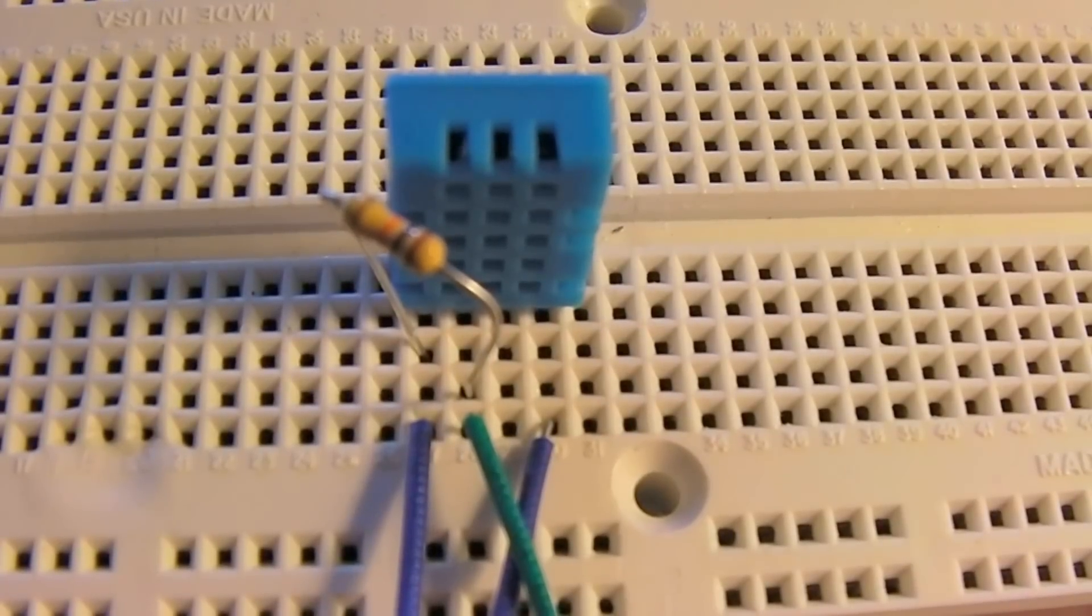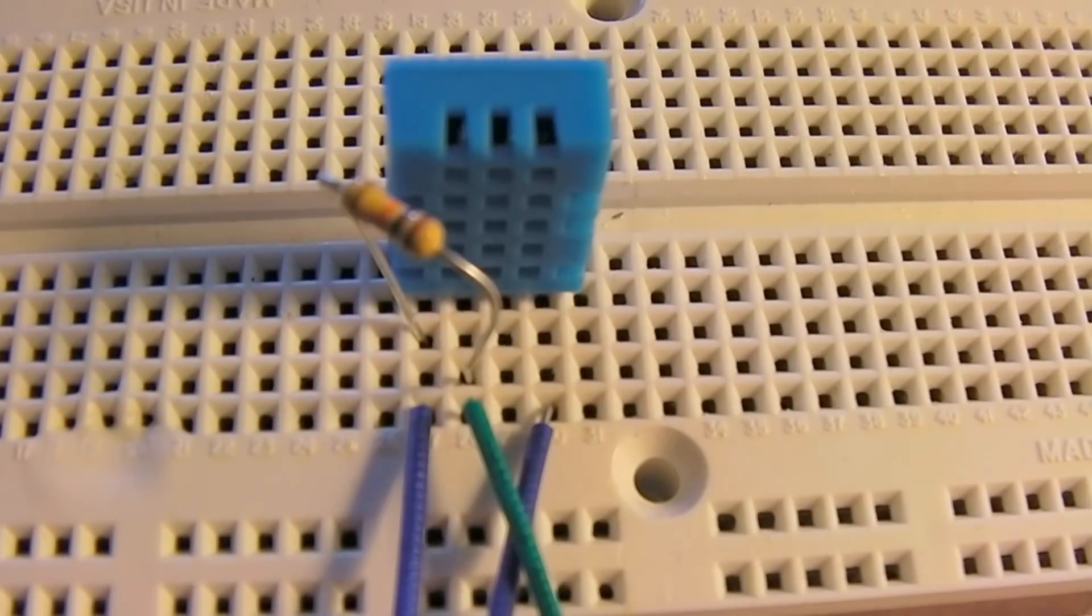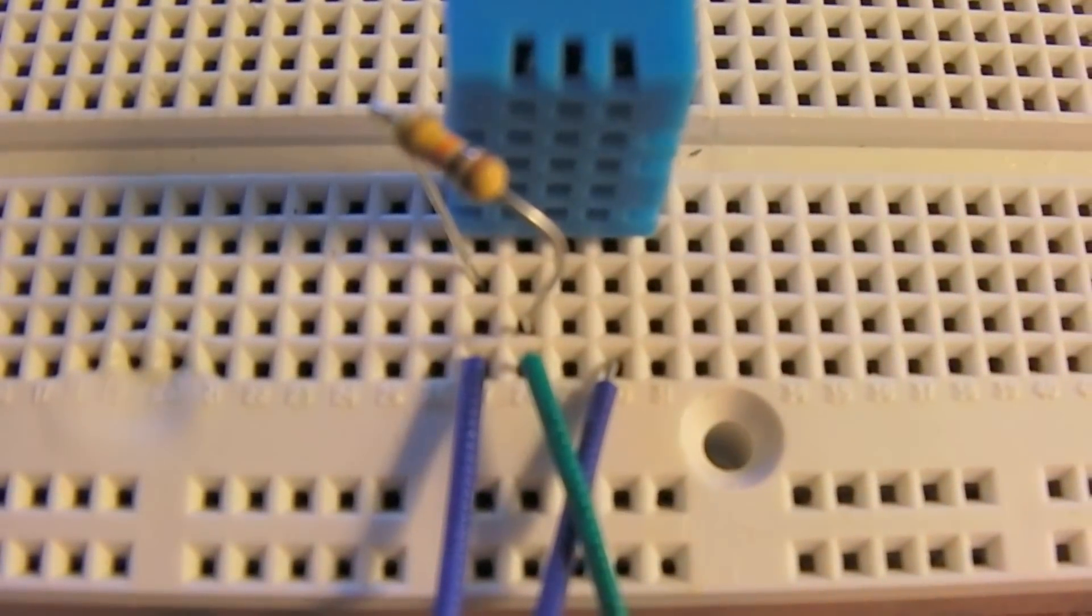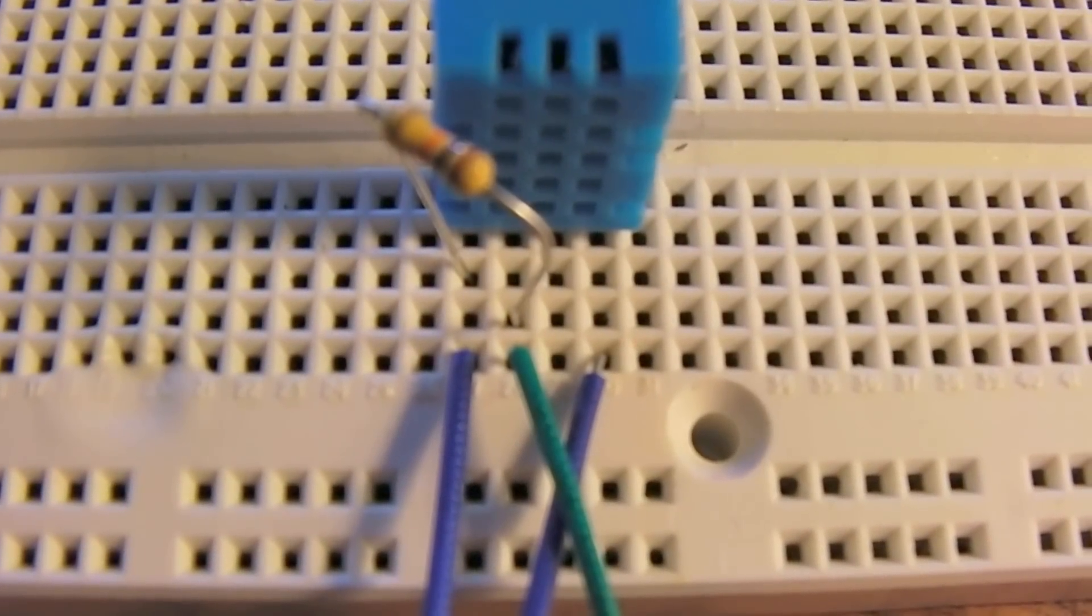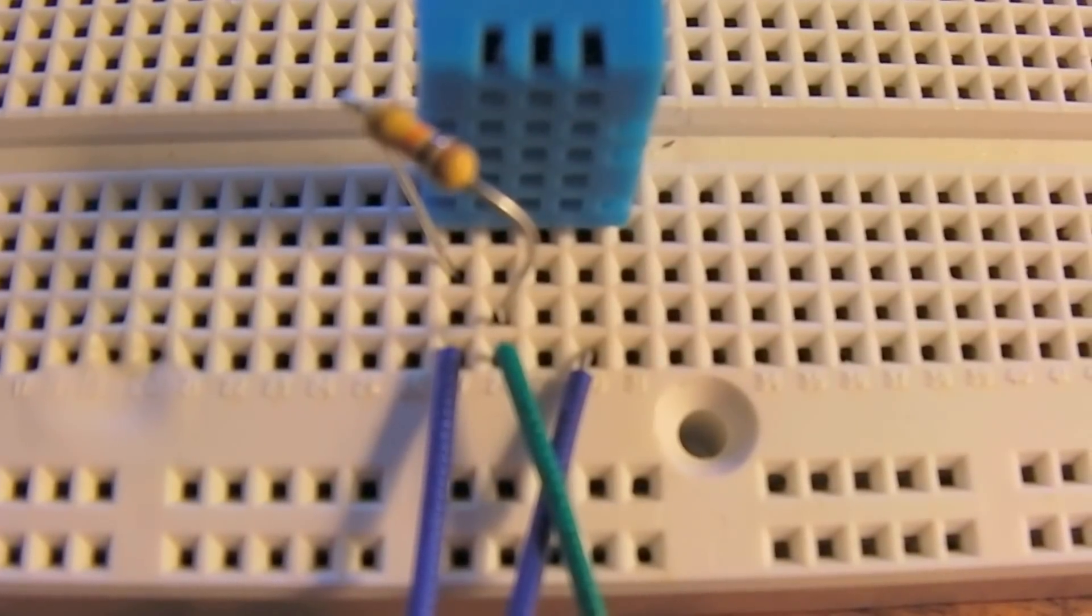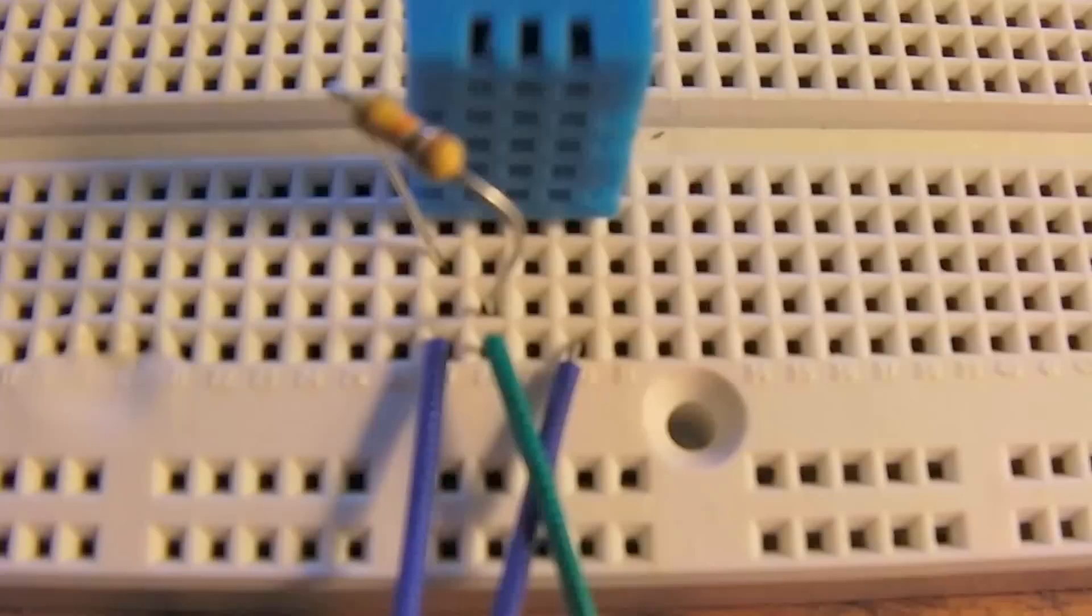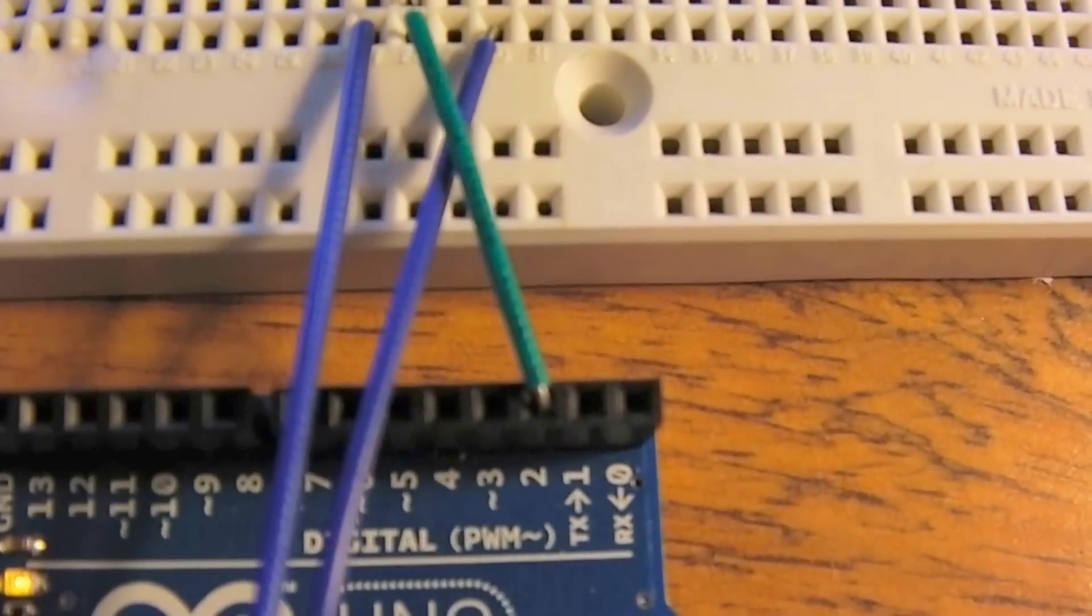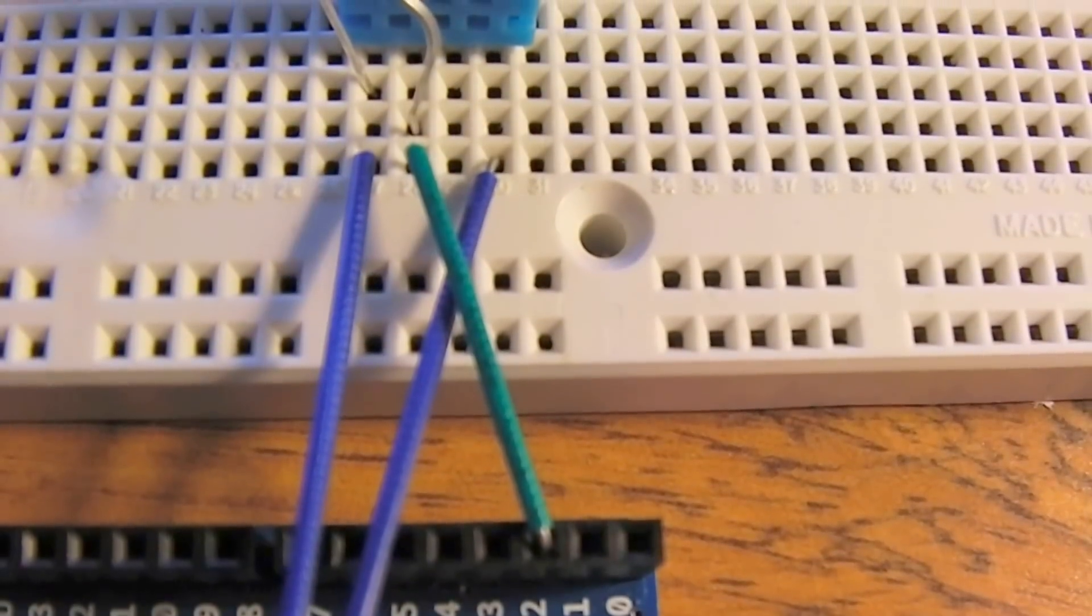So you've got your first pin on the left there. And you connect that up to the 5V on the Arduino. And then you connect a 10K ohm resistor between the first pin and the second one. We're moving left to right here. And then you connect the second pin following the resistor up to pin number 2 on the Arduino.